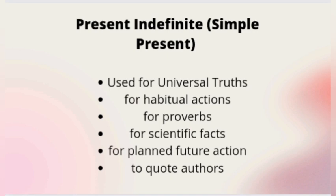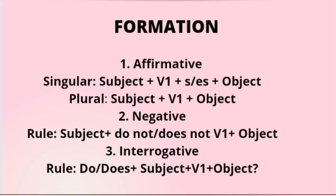Let's look at the formation of simple present. If your sentence is affirmative and your subject is singular — like he, she, or it — your sentence will begin with subject, first form of the verb with S or ES added, and finally the object. In case of a plural subject — like we, you, or they — you begin with subject, first form of the verb, and object.